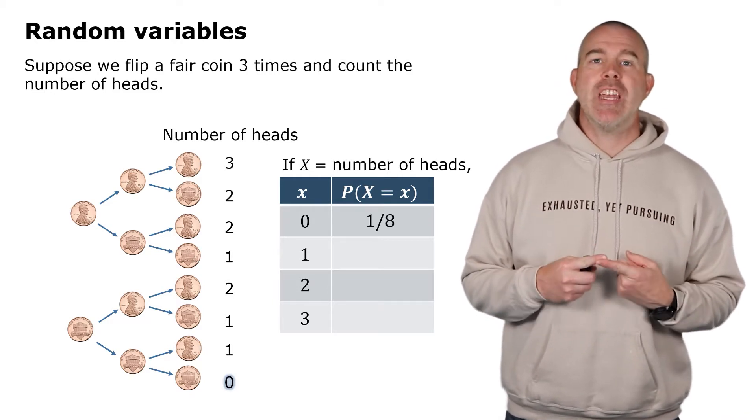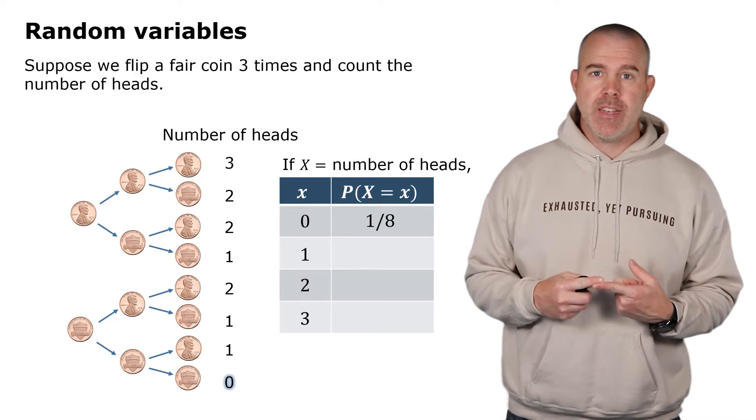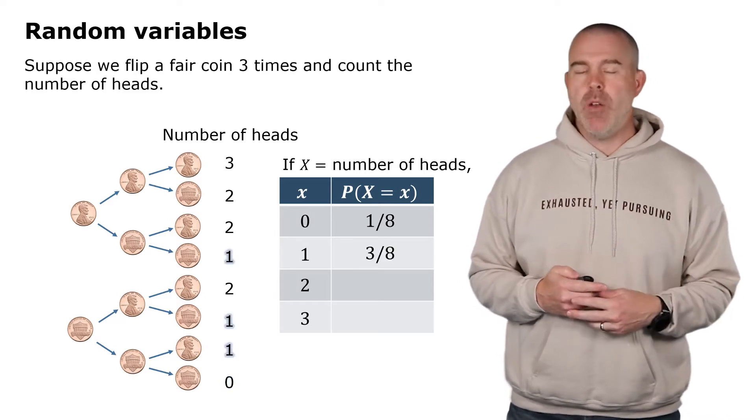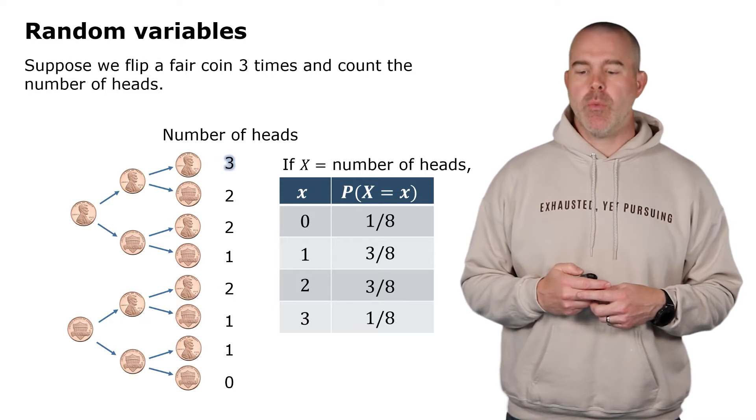We'll make a variable there that will be zero, one, two, or three, and then the probability. Let's see, there's one way to get no heads, that would be tails, tails, tails. Three ways to get one, three ways to get two, and then one way to get three.